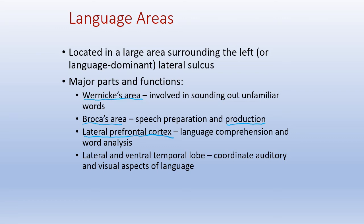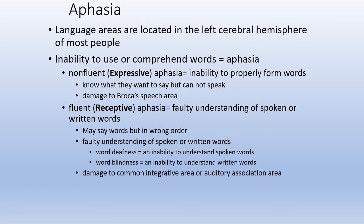Further into the temporal lobe, we coordinate the visual aspects of language — the written component — with the auditory components. As we read and look at words, we interpret that information. Visual aspects also include things like body language. All of these different language components must come together perfectly for our understanding of language to work.